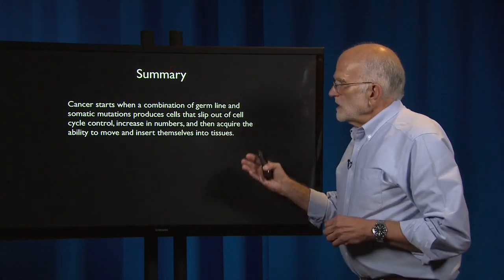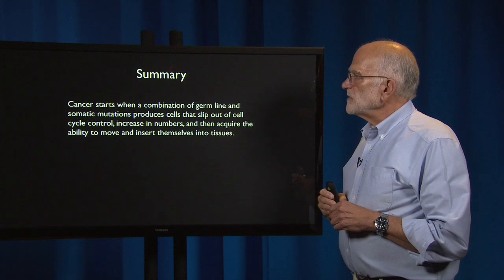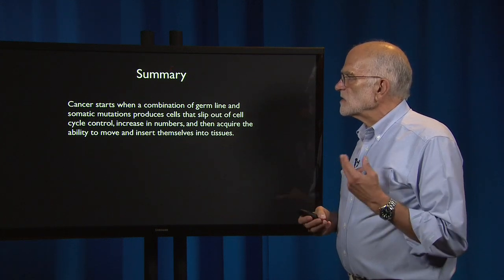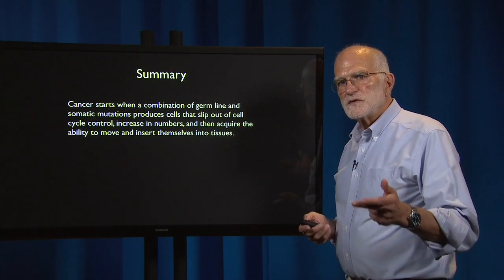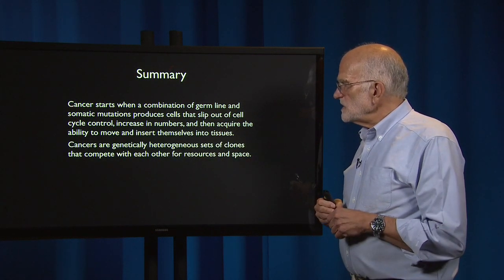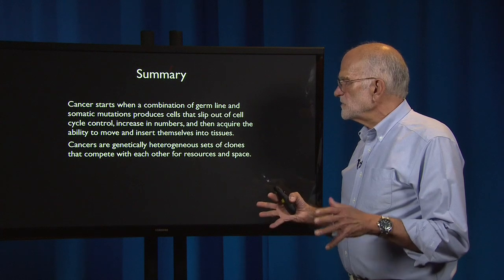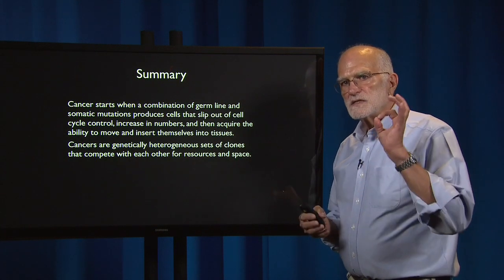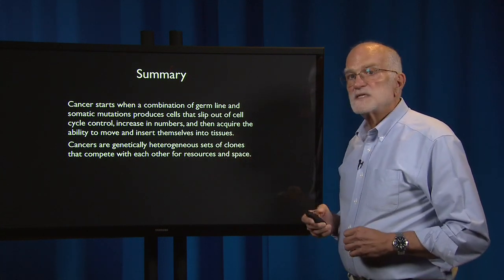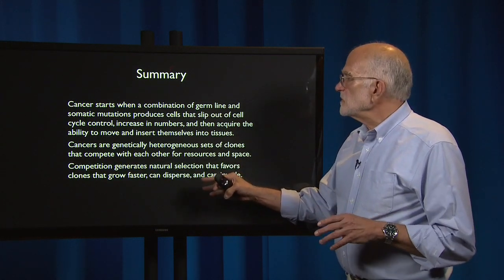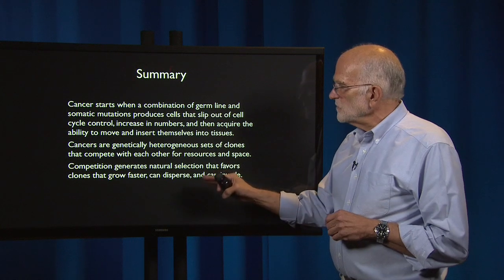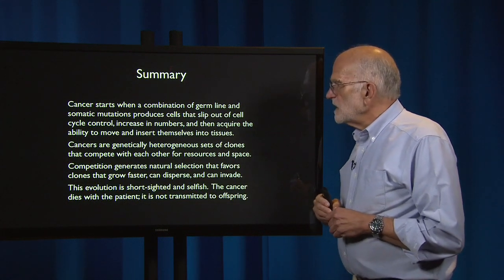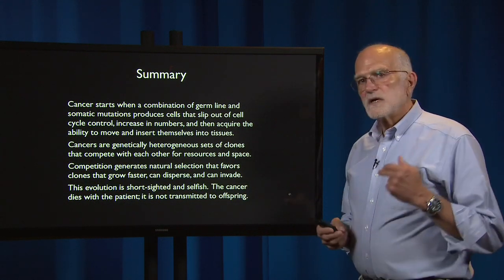To summarize: cancer starts when a combination of germline and somatic mutations produces cells that slip out of cell cycle control, increase in numbers, and acquire the ability to move and insert themselves into tissues. Cancers are genetically heterogeneous sets of clones competing with each other for resources and space — it's not a single thing. Competition among the clones generates natural selection that favors clones that can grow faster, disperse, and invade. This evolution is short-sighted and selfish: the cancer is going to die with the patient and is not transmitted to offspring.